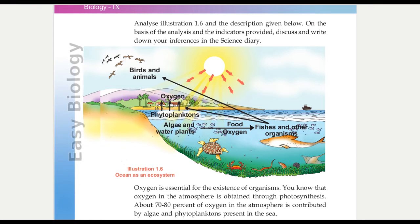The aquatic organisms get oxygen and food from algae and other water plants by the process called photosynthesis that takes place in the ocean.